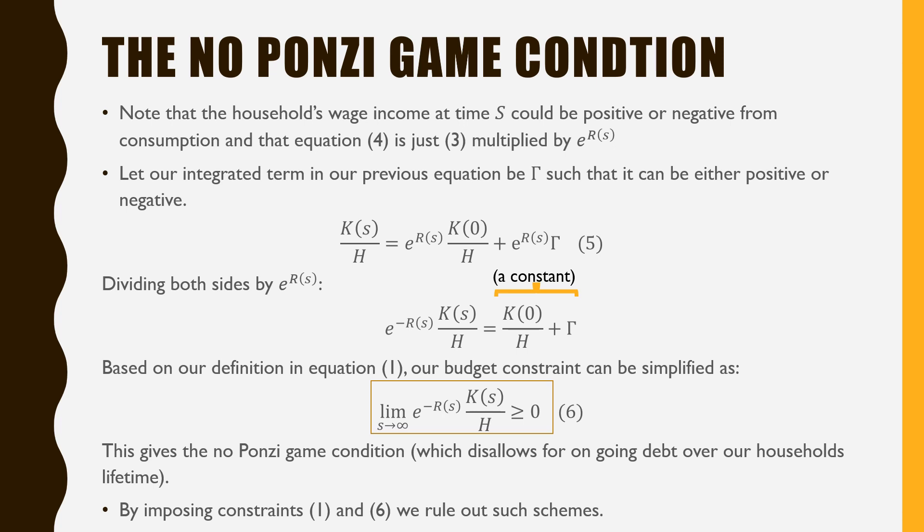Our capital stock per household at time s equals e^(R(s)) times initial capital stock plus e^(R(s)) times gamma, which represents the household's wages minus their consumption.